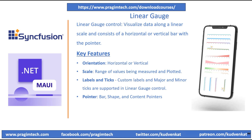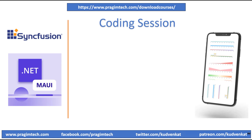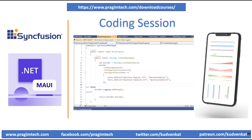All the pointers can be customized as needed and you can also add multiple pointers in the linear gauge. Linear gauge often supports customization options for colors, styles, labels and other visual properties to match the application design or branding. Users may also interact with the linear gauge control by clicking or dragging the pointer to adjust the value it represents. Now that you understand the key features, let's switch to the coding session.